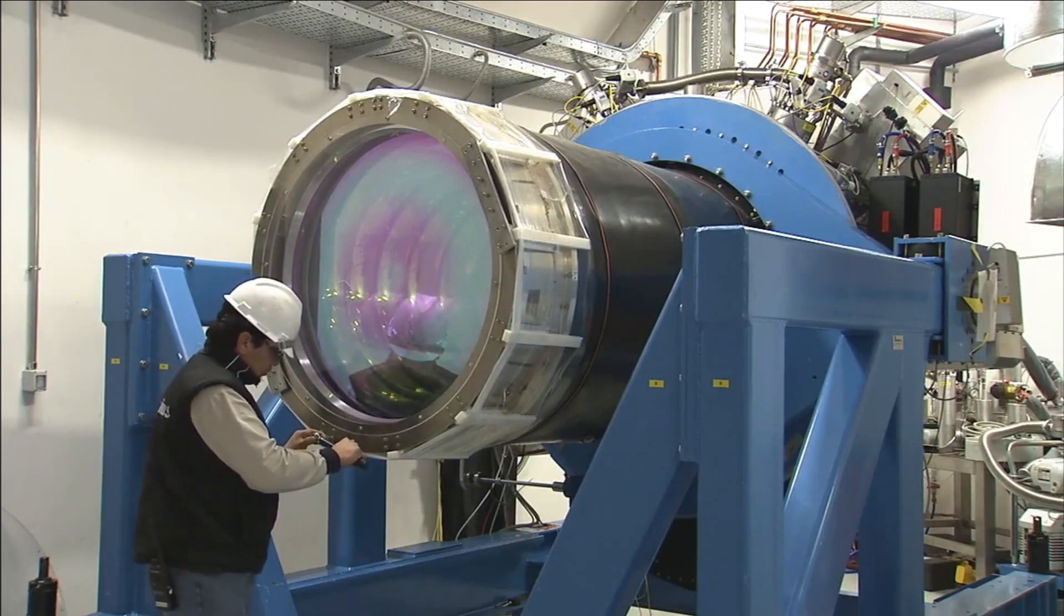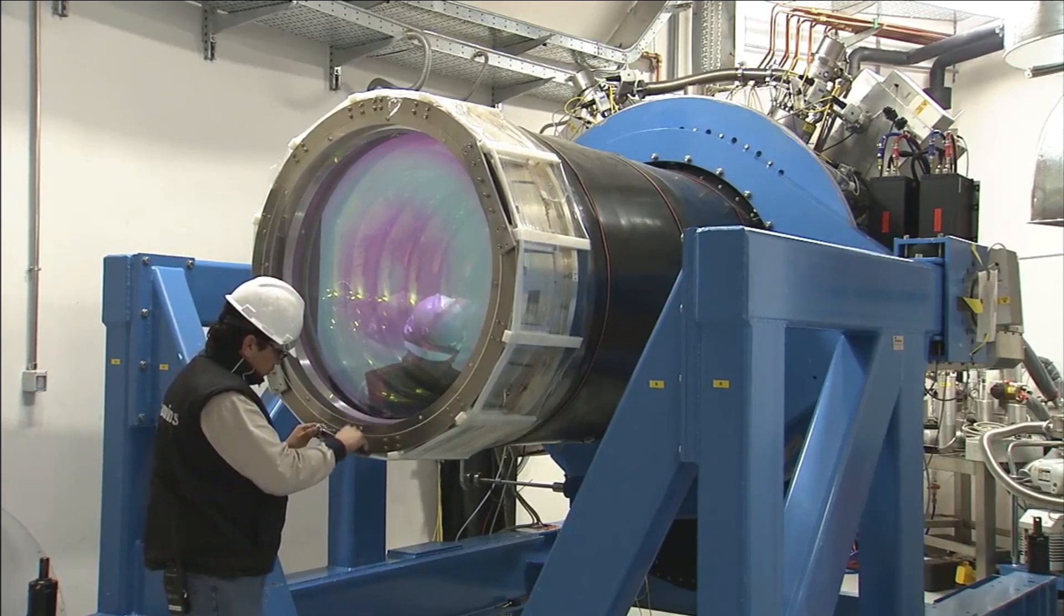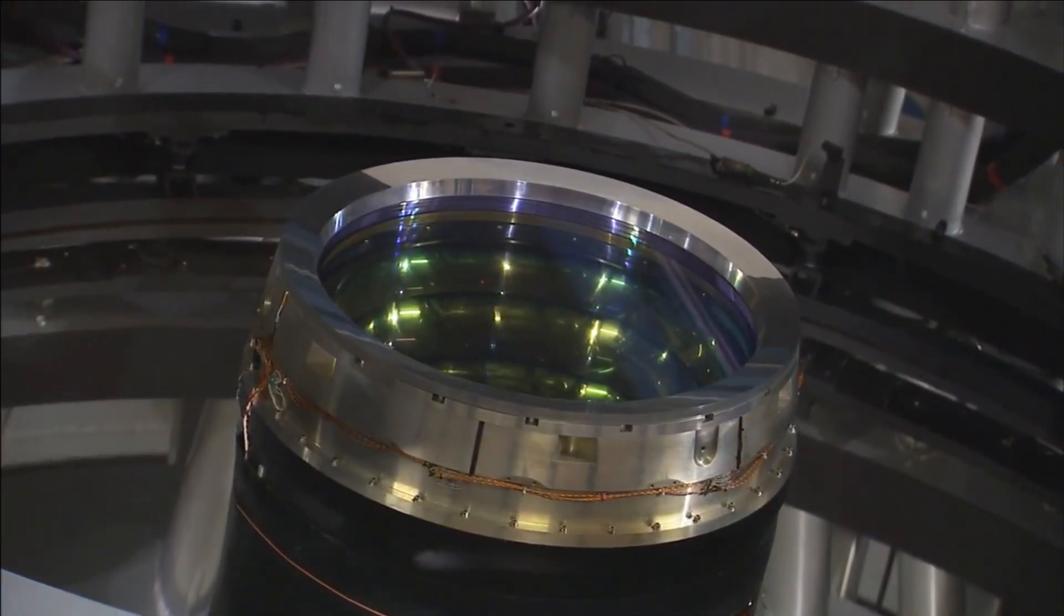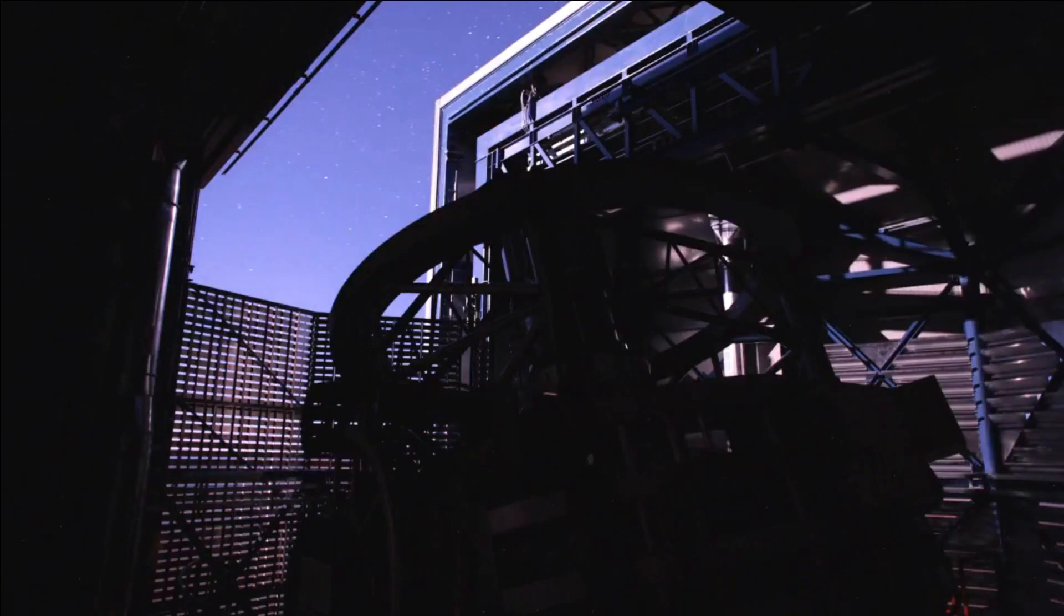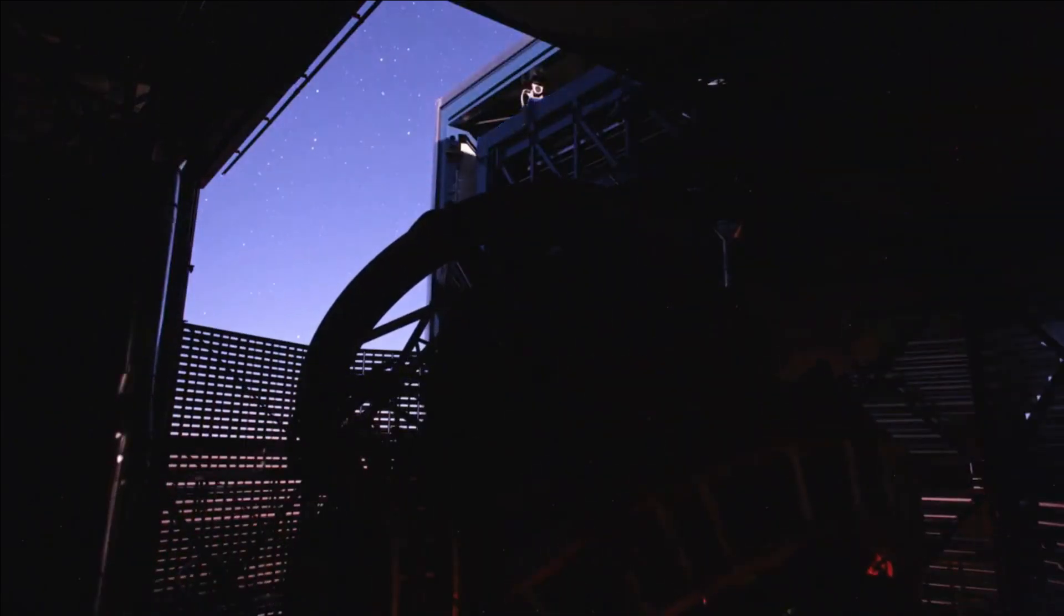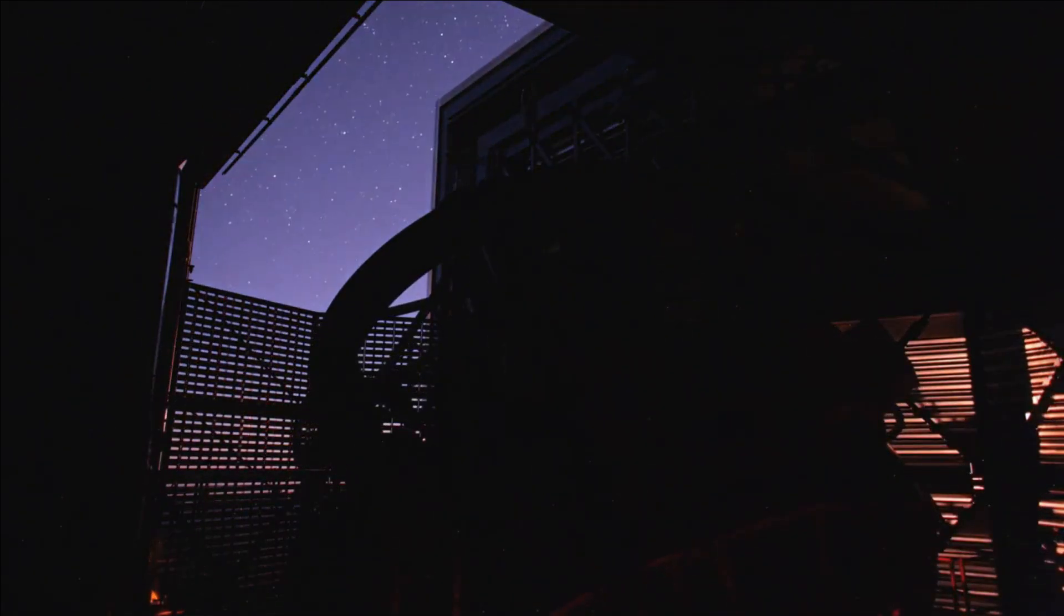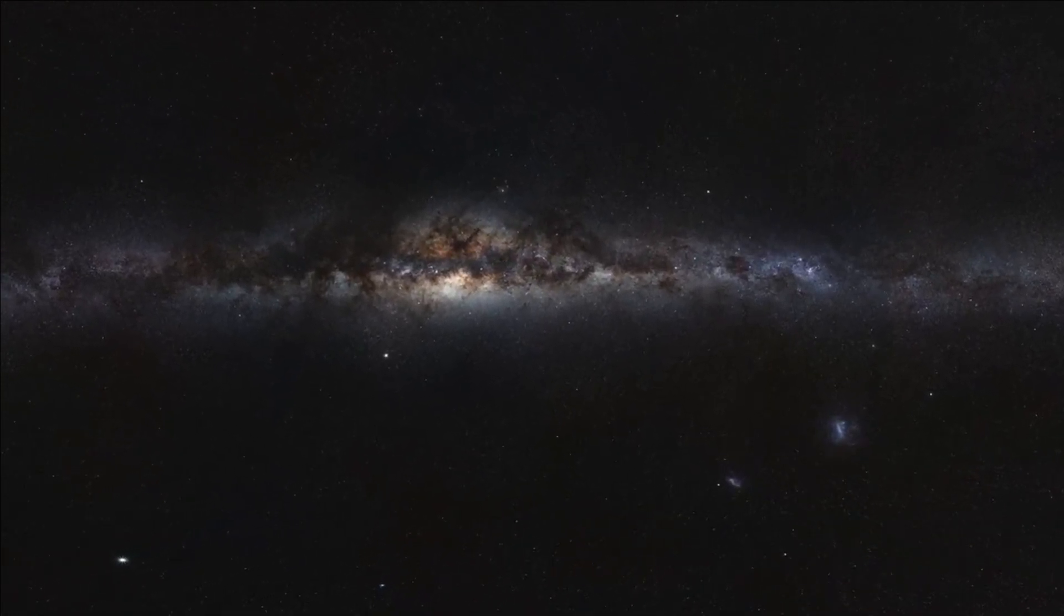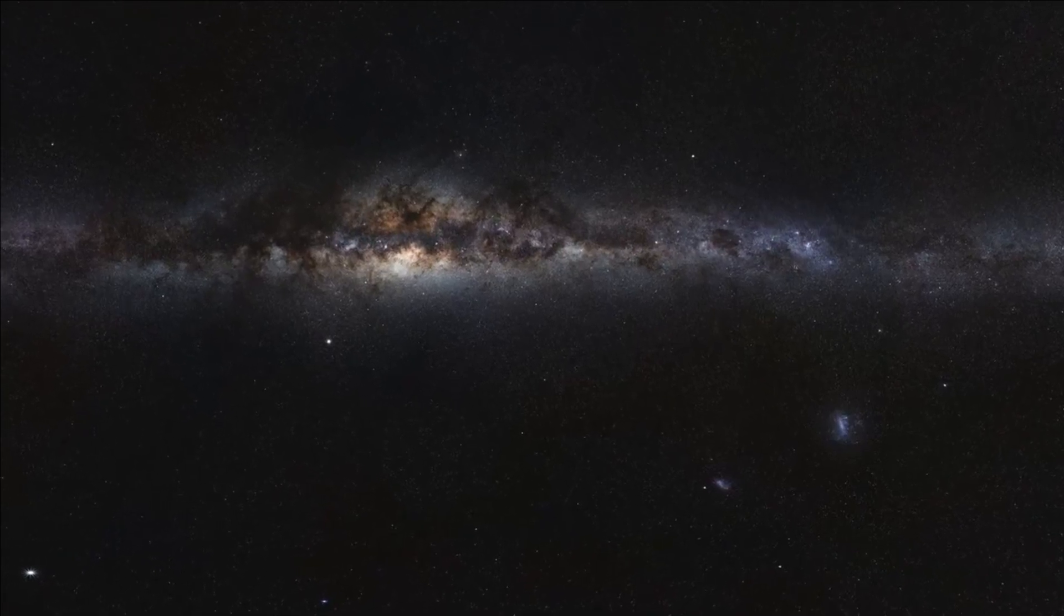While Webb's images may not mark the inaugural direct snapshots of exoplanets, the Hubble Space Telescope has previously captured images of other alien worlds. The task is intrigued. The intense light emanating from a nearby star can obscure the faint glow emitted by the exoplanet.